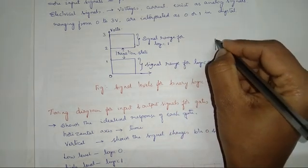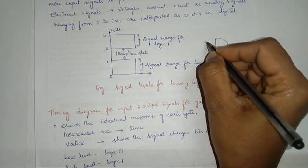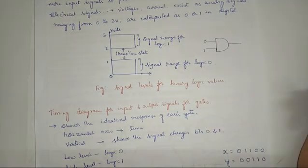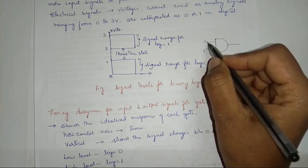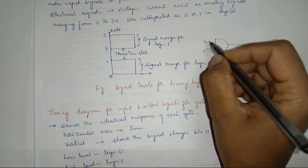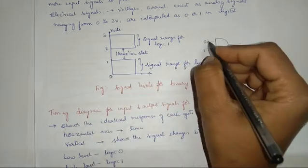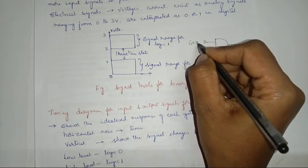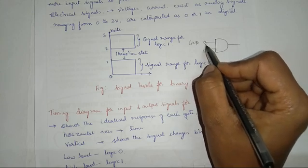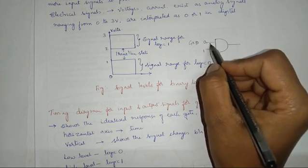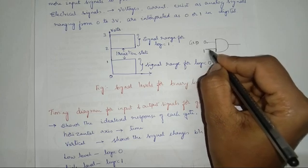Let me show an example. Let us consider I am designing an AND gate and I have to give inputs — here input 0 and here input 1. We don't have digital inputs; in reality we have analog signals. Logic 0 is nothing but the voltage from 0 to 1 volt, so if I take 0 it is nothing but ground — we connect ground to this input, meaning logic 0 is connected. When I want to connect 1 to this input, I connect VCC, 5 volts, to this input.